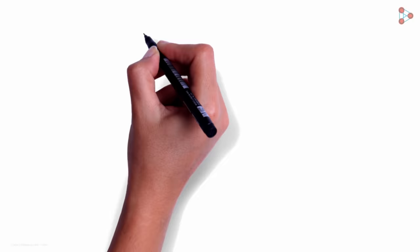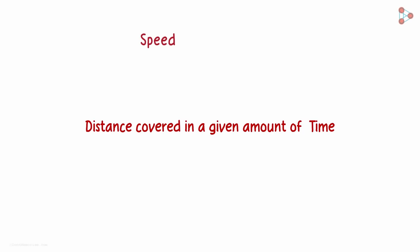We have seen previously that speed is the amount of distance covered in a given amount of time. It's nothing but distance covered over the time taken to cover that distance. Simply put, it tells us how fast an object moves.